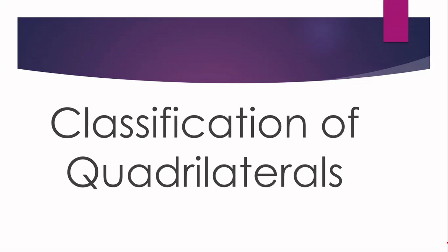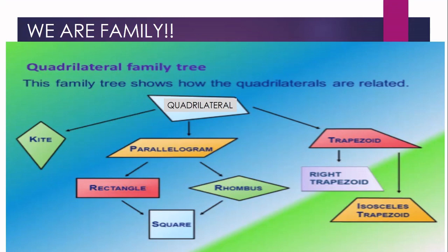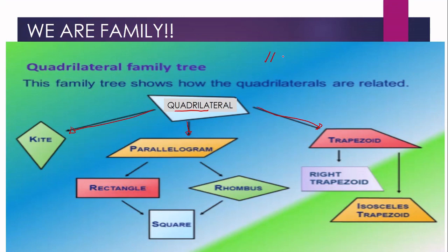Now let us proceed with the classification of quadrilaterals. This is the schematic diagram of the family tree of a quadrilateral. All of these figures are considered quadrilaterals because all of them have four sides. Under the quadrilateral we have the trapezoid, the parallelogram, and the kite. Quadrilaterals are classified according to the number of pairs of parallel sides.